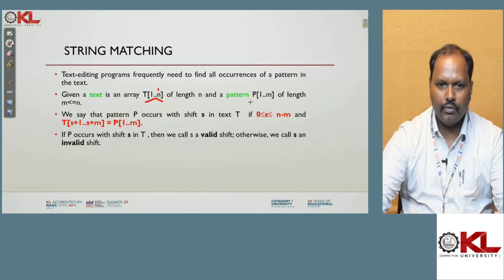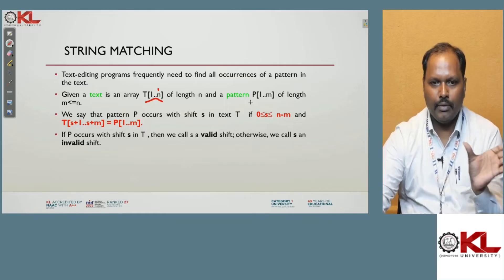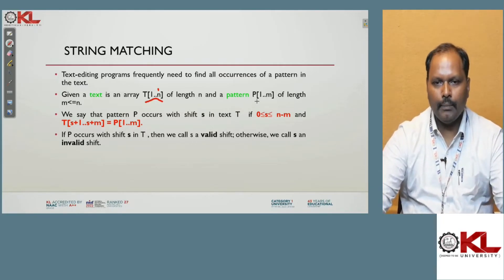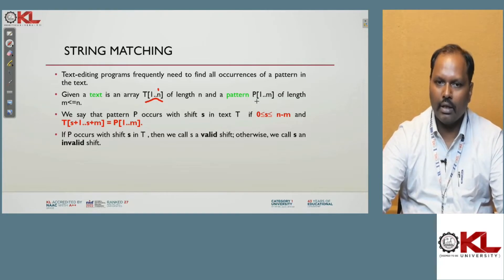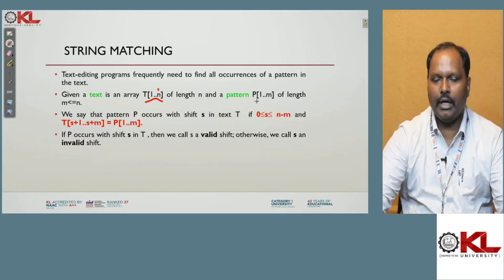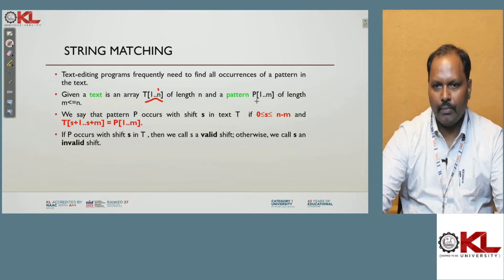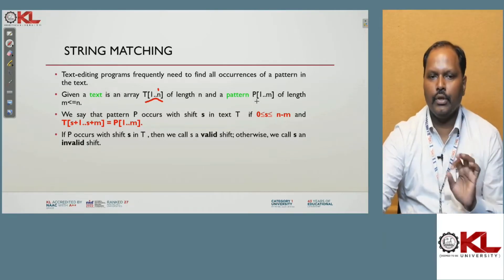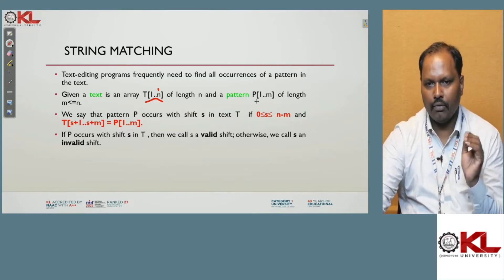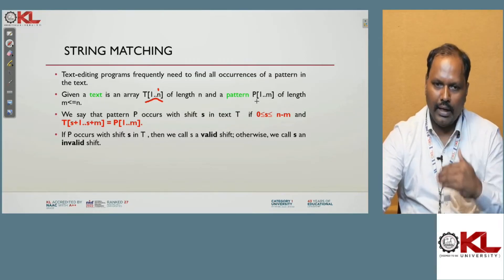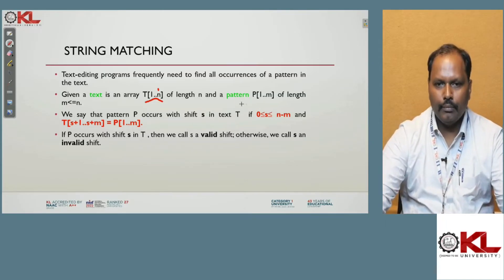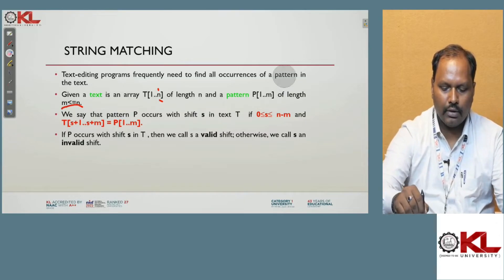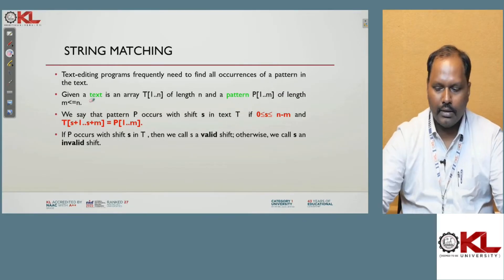Then coming to the pattern, which we want to use for matching. The text has a maximum length of n elements, and the pattern should be somewhat less. If the text has 10 letters, the pattern should be 3, 4, or 5 — less than the text. A pattern of 11 letters when the text is 10 is not possible. Text is 1 to n, and P is 1 to m, where m is less than or equal to n. This rule is compulsory.